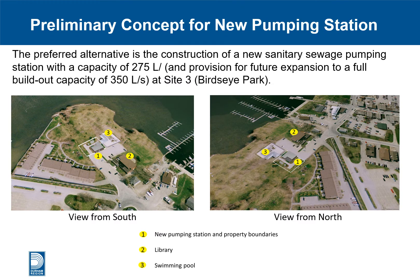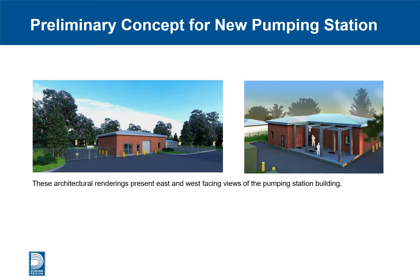The preferred alternative located in Birdseye Park will involve construction of a new pumping station with a capacity of 275 litres per second during phase 1, with provision for future expansion to a full build-out capacity of 350 litres per second. As shown in the slide graphics, the pumping station will be located adjacent to the swimming pool on the west side and across from the library to the north. Once constructed and commissioned, the existing Water Street Sanitary Sewage Pumping Station will be decommissioned and demolished. Architectural renderings of the east and west facing views are provided to represent a typical sanitary sewage station, though the detailed design process has not started and the look of the facility is subject to change.